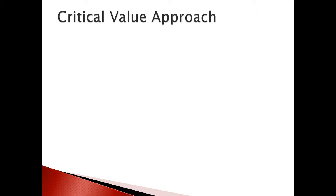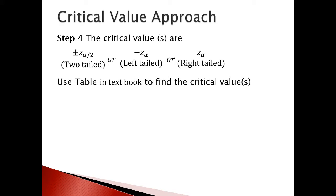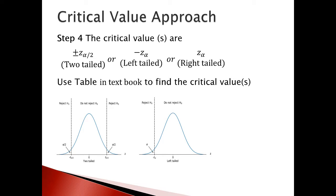Step four uses the critical value approach. The critical values are: plus or minus z-alpha-over-two for the two-tailed test; negative z-alpha for the left-tailed test; and positive z-alpha for the right-tailed test. We can use a table in the textbook to find the critical values. The first figure illustrates the two-tailed case, the second figure the left-tailed case, and the third figure the right-tailed case.